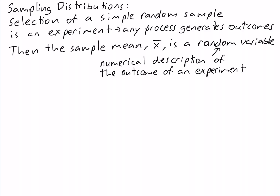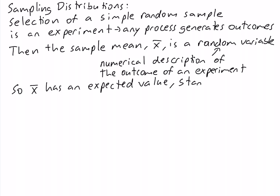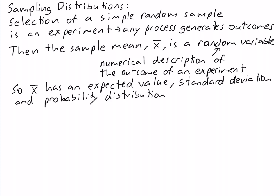So our selection of a simple random sample is an experiment, and our sample mean describes the outcome of the experiment numerically — it assigns a numerical value to the outcome. Since our sample mean is a random variable, it has an expected value, a standard deviation, and a probability distribution, just like any random variable.